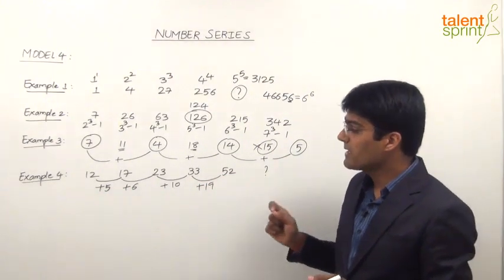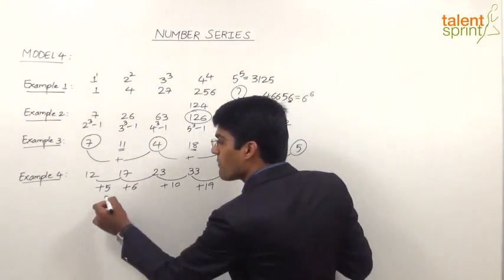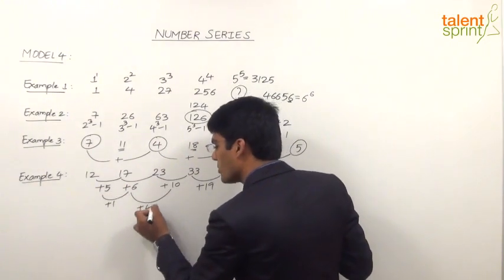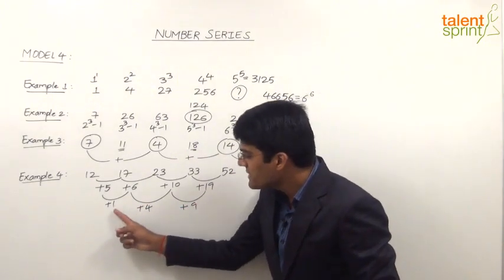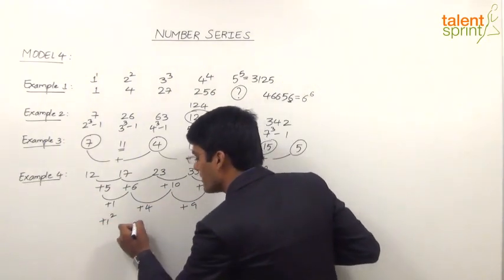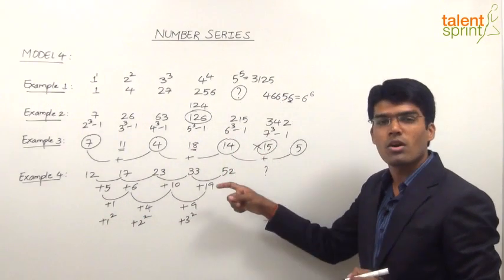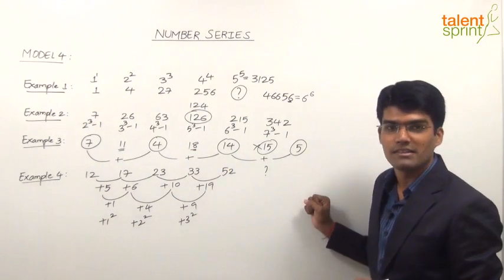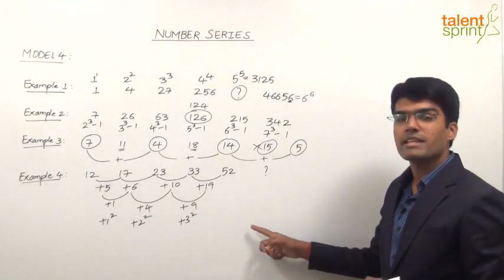But if someone tries to observe the difference of the differences then he gets the right answer. For example, 5 and 6 the difference is 1, so 5 plus 1 is 6. 6 plus 4 is 10. 10 plus 9 is 19. And now if you look at these differences 1, 4 and 9 this is like 1 square, 2 square, 3 square. That is plus 1 square, plus 2 square, plus 3 square. So you find that the differences of differences form a particular logic. So going by that we can say that if this is 1 square, 2 square and 3 square, next one has to be 4 square.